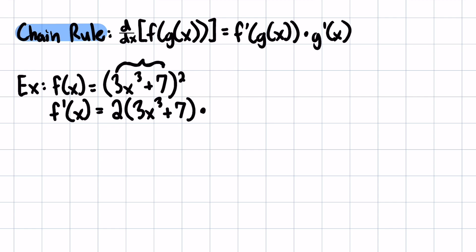And then we multiply that by the derivative of the inside. So here we take down the three, three times three is nine, so nine x squared, and then the seven goes away because it's a constant. And so this is going to be our derivative.